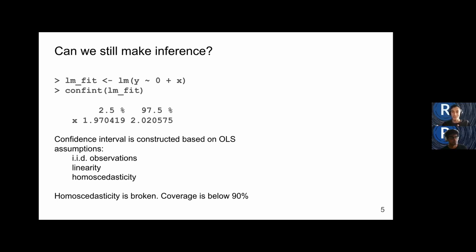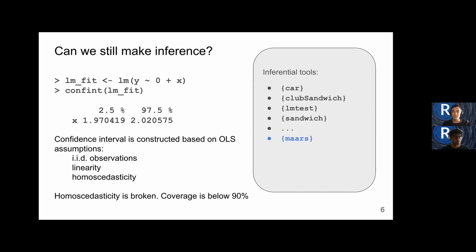The real question is now, can we still make inference on the coefficient of interest, even if one of the OLS assumptions is not met? After having fitted a model without interceptor on the data, we can call confint to get the 95% confidence intervals for this coefficient estimates. The confidence interval assumes homoscedasticity, that is a constant rotational variance. But in this case, we do not have that. Therefore, once we actually check for coverage based on multiple replications, we find out that it is below 90%.